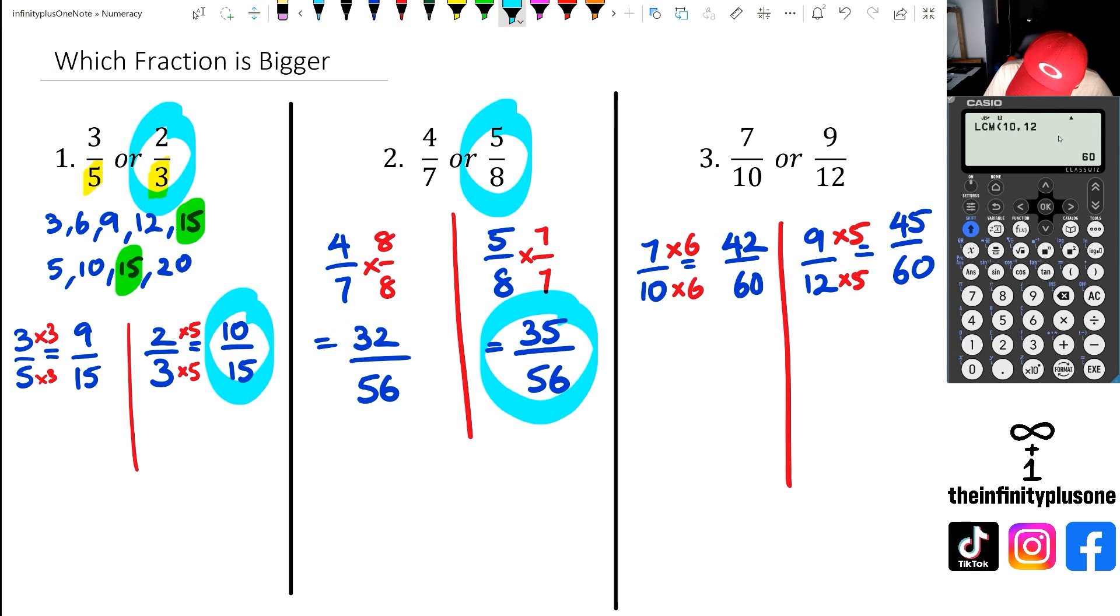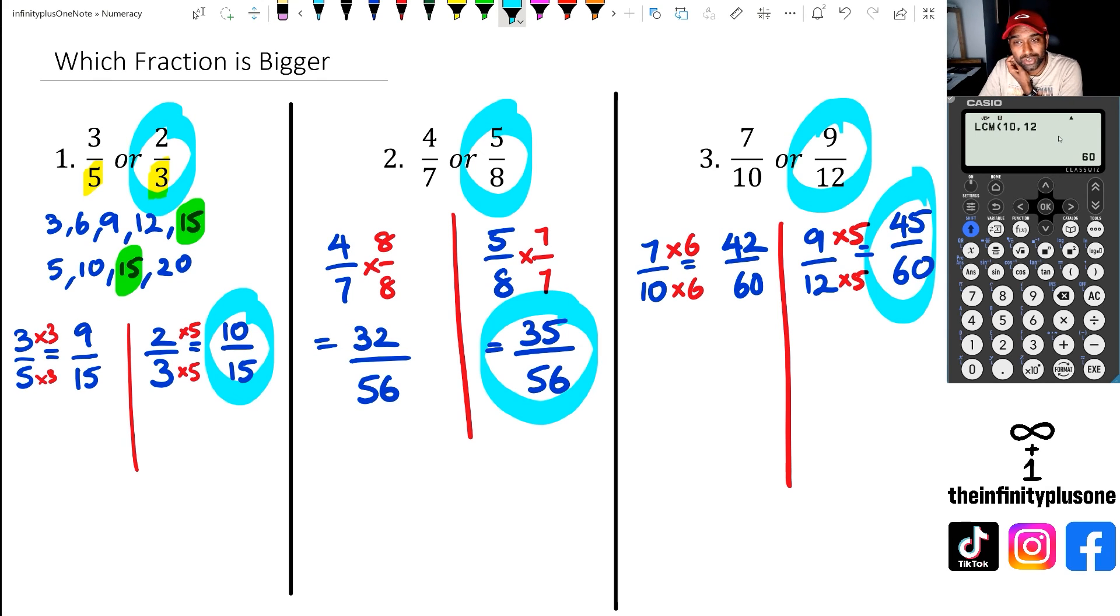And I can do the same. 12 times five is 60, nine times five is going to be 45. And yet again, we've got 45 over 60. That's the bigger fraction compared to 42 over 60. So in this case, we can also say nine over 12 is bigger than seven over 10.